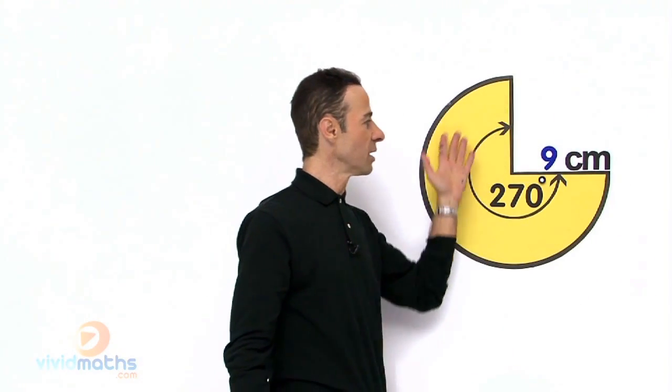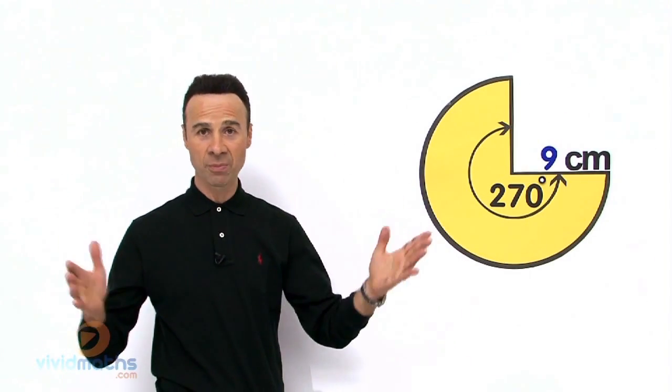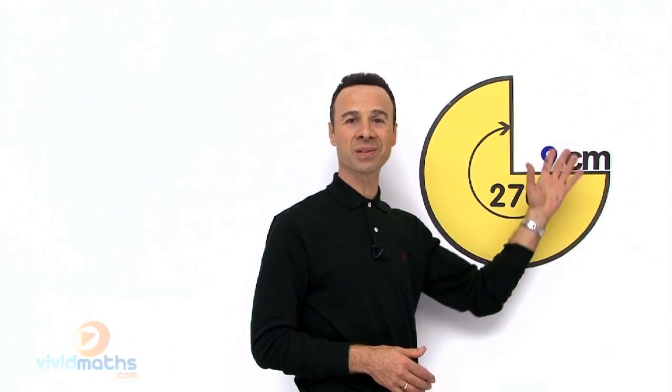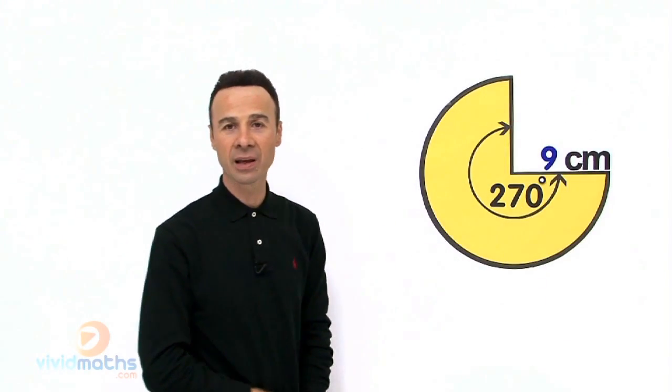So what we have here in yellow is the shaded area that we are required to find. That is our objective. Now the yellow area can be found, except someone took out this white area here, so a bit of this cake has disappeared.